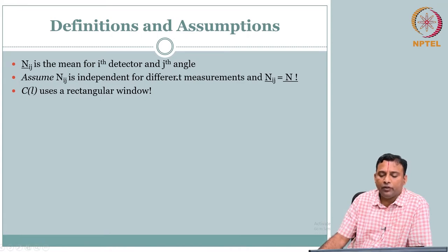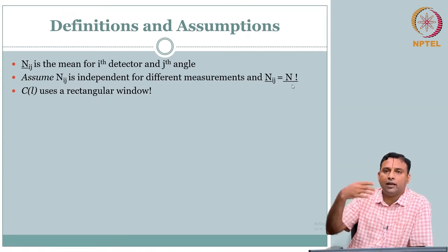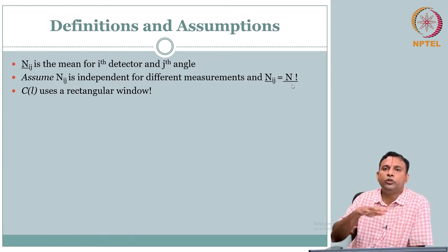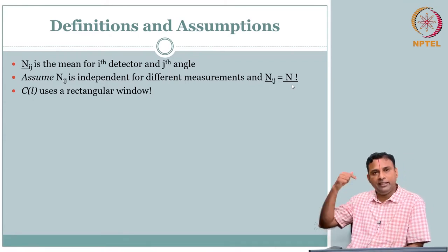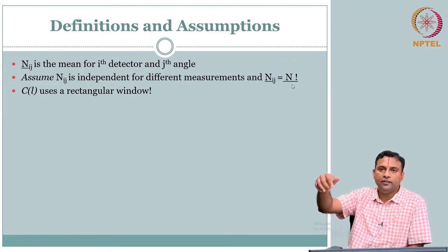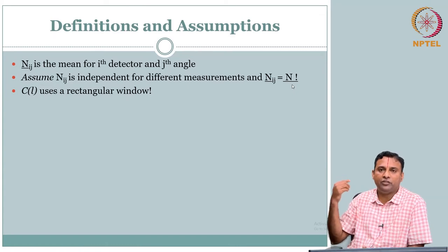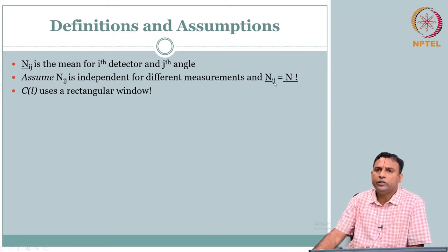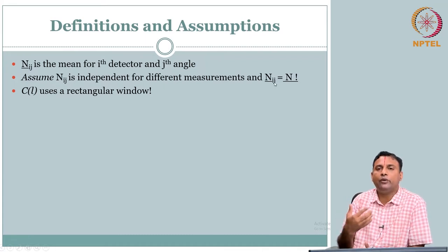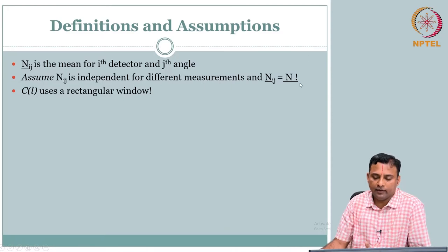Assume n_ij is independent for different measurements, and then say n_ij equals n — that is, the mean is the same. When will the mean be the same? The same number of photons coming through. If I have a homogeneous medium, whatever I send in and receive at each detector for different views — if it is a symmetric circular object — all will have the same average value, because it is homogeneous attenuation.